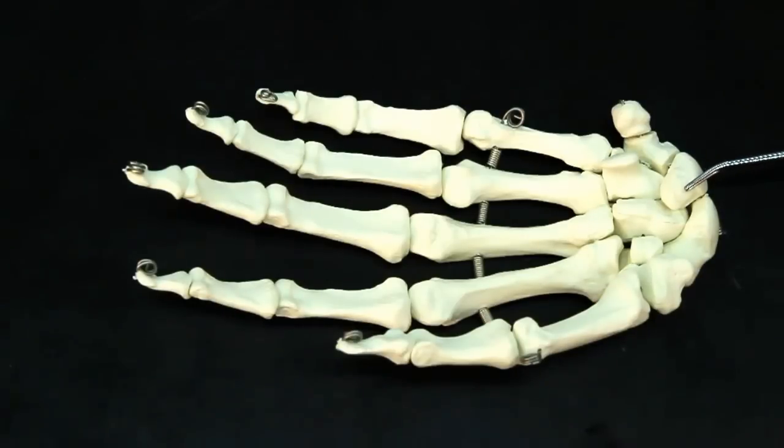From the scaphoid, we go over here to the lunate. From the lunate, we go to this one, which is going to be your triquetrum, and then off to this one, which is the pisiform.